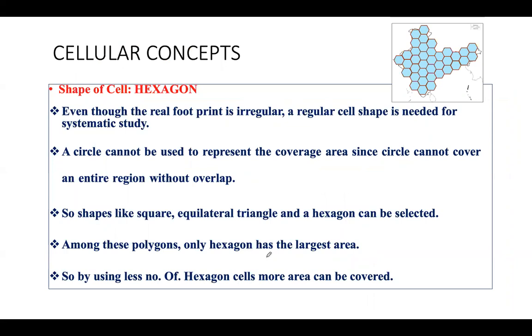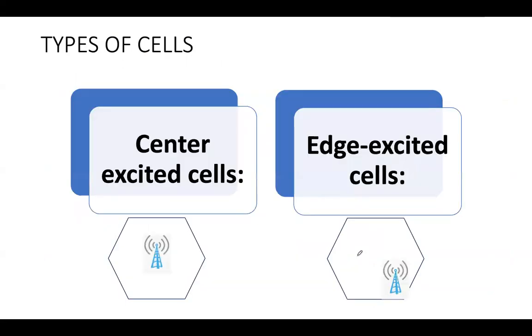Hence the shape of all the cells in any cellular communication is a hexagon. There are two different types of cells.